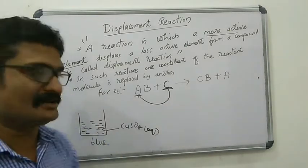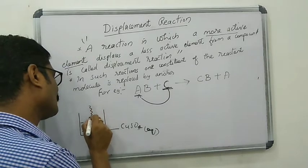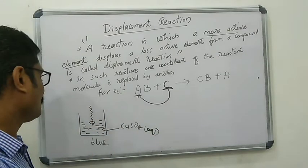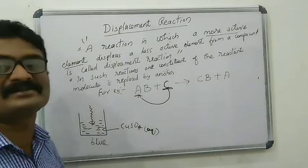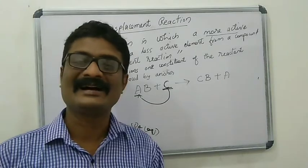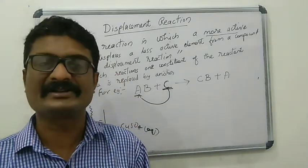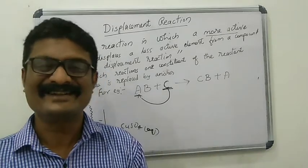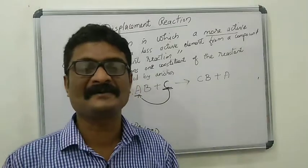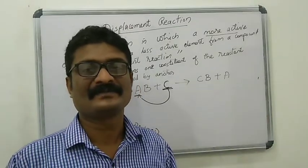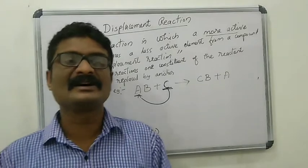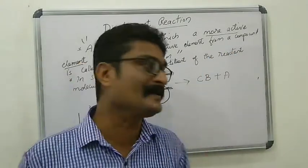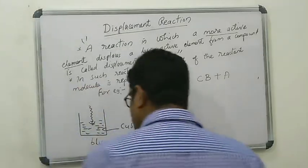Then we can add zinc granules into this copper sulfate solution. After adding the metal zinc to the copper sulfate solution, what will you observe? The blue copper sulfate solution turns colorless.